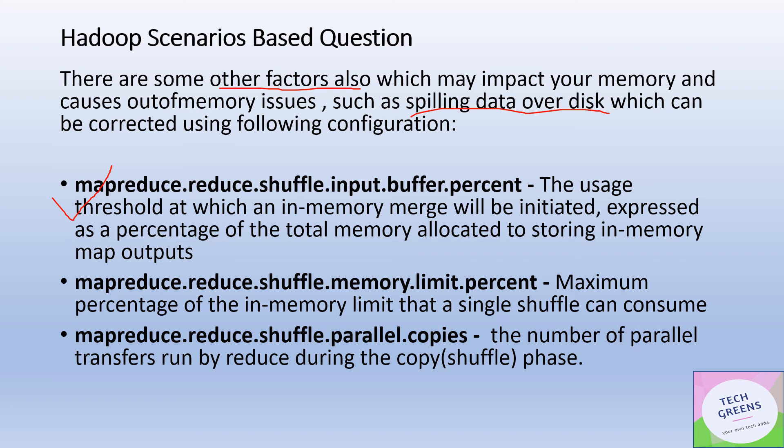The second property is `mapreduce.reduce.shuffle.memory.limit.percentage`. It defines the maximum percentage of the in-memory limit that a single shuffle operation can consume. During shuffling, data needs to be serialized and sent over the wire, and this percentage defines how much of the overall memory allocated to an individual container can be used for that functionality.